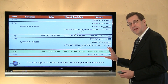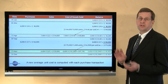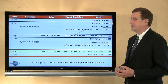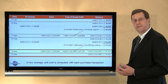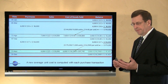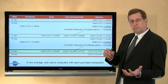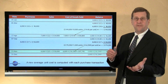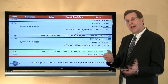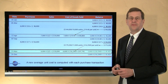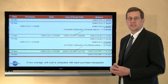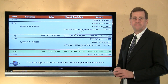The perpetual average gives you a different result than the periodic average method covered in a previous module. In closing: periodic versus perpetual FIFO gives you essentially the same result, while LIFO and average cost methods can give somewhat different results between periodic and perpetual approaches.